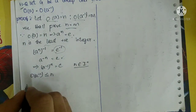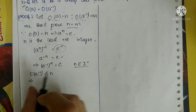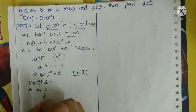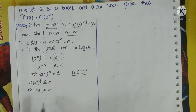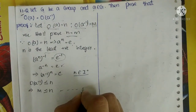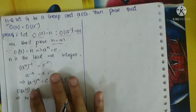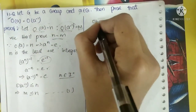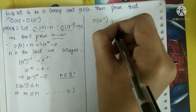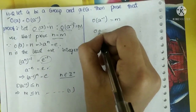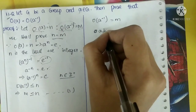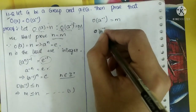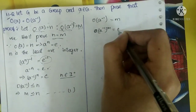So O(A⁻¹) ≤ N, which means M ≤ N — so M is less than or equal to N. Let this be equation 1. Now half the problem is solved, and now we have to do the other half by taking O(A⁻¹).